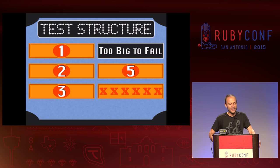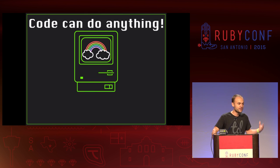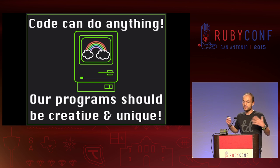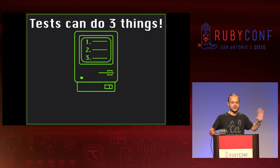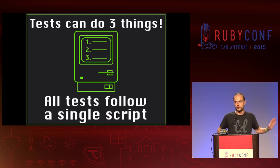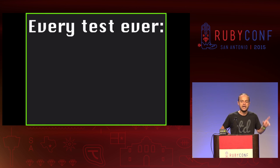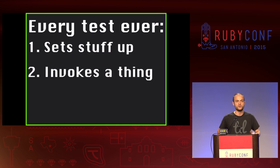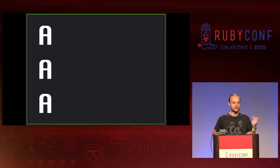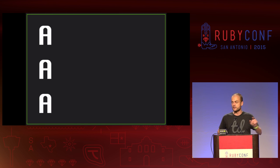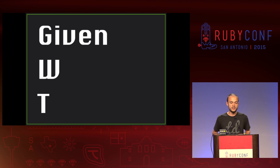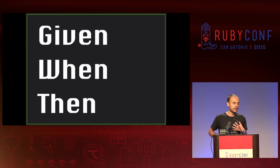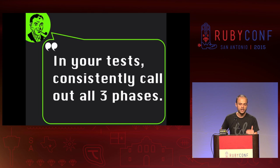Next I want to talk about how we hate when our tests go off script. Code can do anything — our programs should be unique and creative, special unicorns of awesomeness — but tests can and should only do three things. They all follow the same script. Every test ever sets stuff up, invokes a thing, and then verifies behavior. We're writing the same program over and over again. It has three phases: arrange, act, and assert. A more natural English way to say that would be given, when, then. When I'm writing a test, I always intentionally call out those three phases really clearly and consistently.